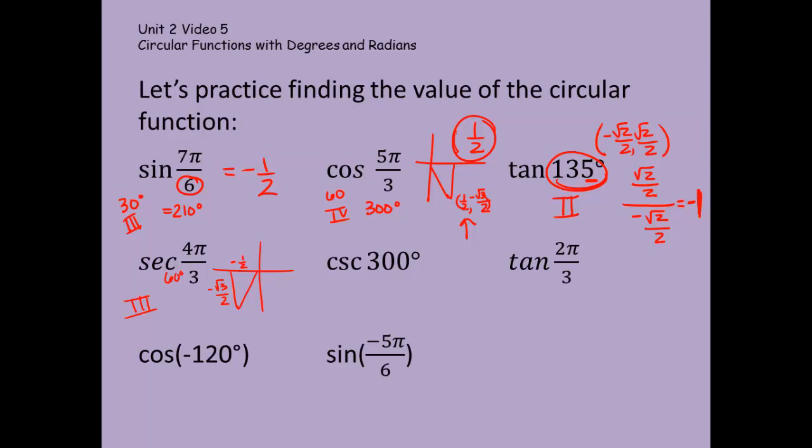Now, if I want the reciprocal of cosine, and cosine is x, then I would like the reciprocal of the x, and my x here is negative 1 half. The reciprocal, negative 2.